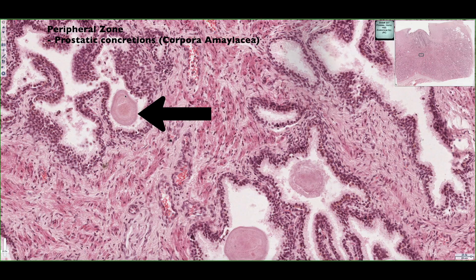Researchers think that these structures are aggregations of prostatic secretory products that build up over time. In older people, you're going to have much more of these prostatic concretions found inside the glands of the prostate compared to a younger person.